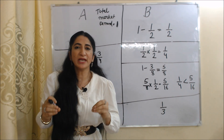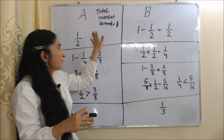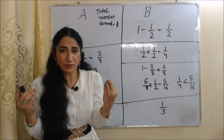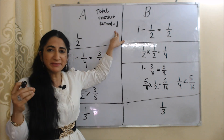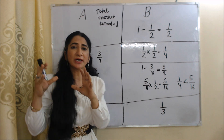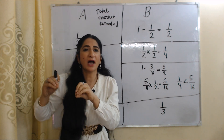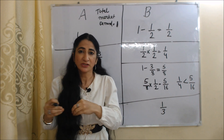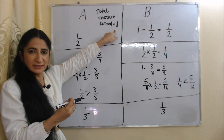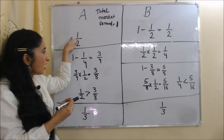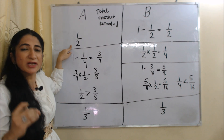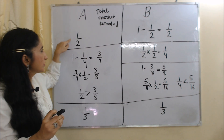Now let's understand this model with the help of an example. We assume we have only two firms — firm A and firm B — and initially total market demand is equal to 1. A starts production. As we discussed, each firm will produce half of market demand, so A will produce 1/2.